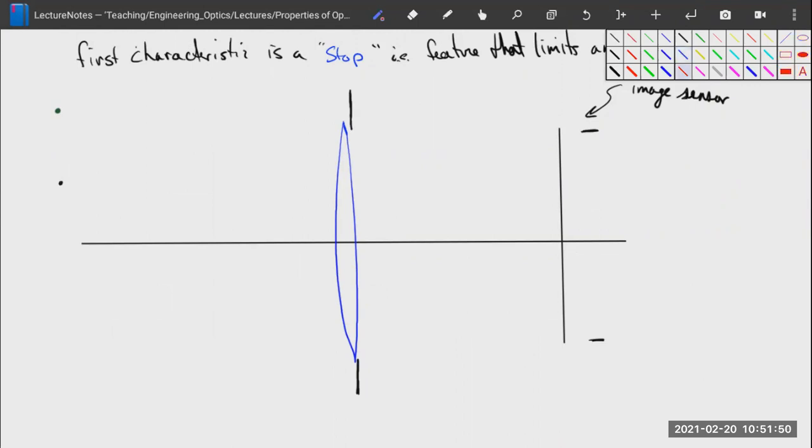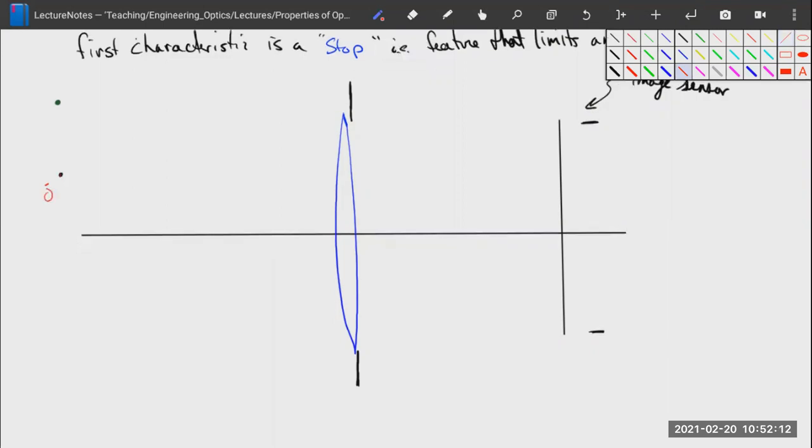Let's draw some rays. We're going to assume this is a well-designed optical system where light from the object is focused onto the image sensor. Since we know all the light from the object is going to be focused onto the image sensor, we can just draw some lines. First, we draw the line through the center of the lens, which tells us where on the image sensor our image will appear. Then we can draw all our rays.